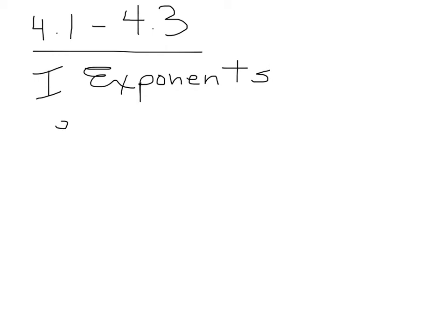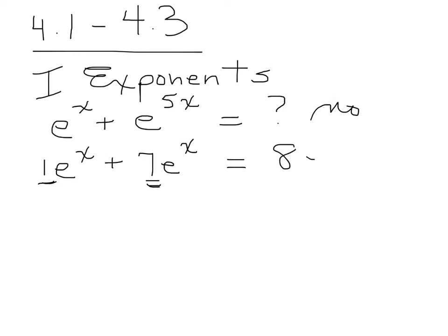We've been working a great deal with e to the x. What if you had e^x plus e^5x? Could you do anything to make that simpler? The answer is no. What if you had e^x plus 7e^x? Since you have a 7 here and a 1 here, you could end up with 8e^x.